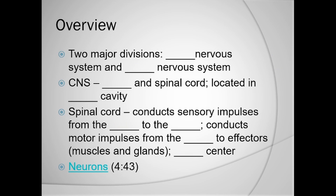There are two major divisions to the nervous system: the central nervous system and the peripheral nervous system. For the central nervous system, we're talking about the center of the body — the organs dealt with in the CNS would be the brain and the spinal cord, located in the dorsal cavity. From that central nervous system running down the middle of the body comes the peripheral nervous system. Peripheral means out away from the center, going out toward the external parts of the organism.